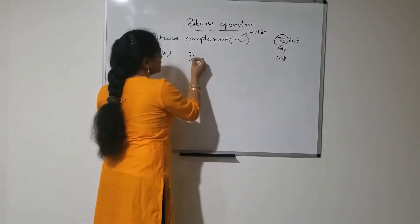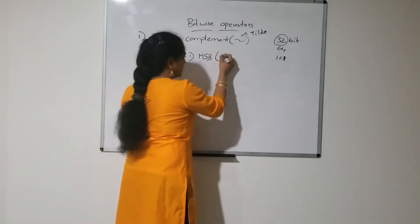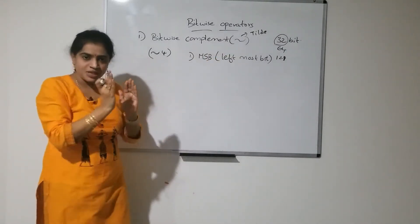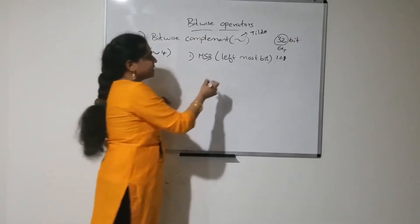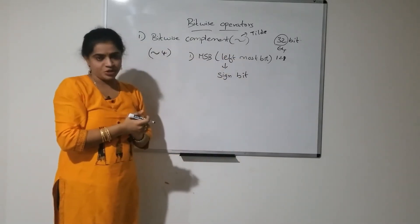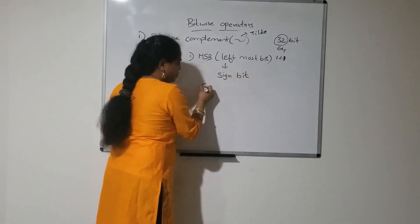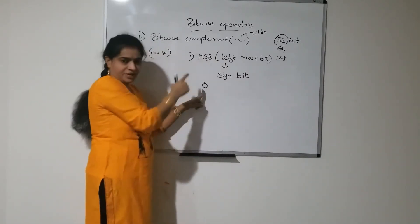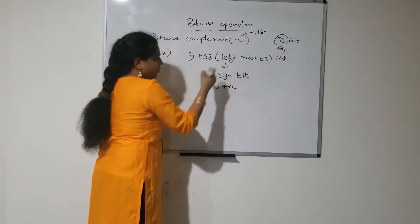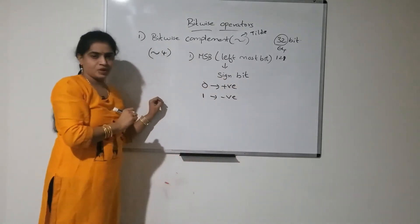So, what are those rules? The most significant bit, MSB, is the leftmost bit. This leftmost bit will act as a sign bit in the 32-bit representation. If the sign bit is 0, it represents a positive number. If the most significant bit is 1, it represents a negative number.